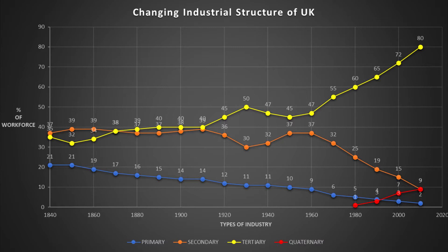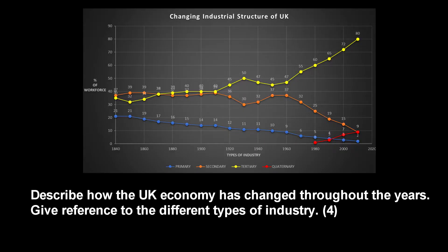If we take a look at this graph showing the changing industrial structure of the UK, there's a lot more information on here to break down. The four mark question is: describe how the UK economy has changed throughout the years, giving reference to the different types of industry. This is a four mark question, so you need to make sure you go into enough detail on each type of data.